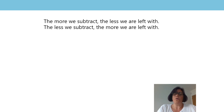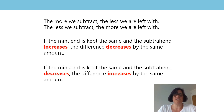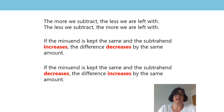Two lessons ago, we learned that the more we subtract, the less we're left with, or the less we subtract, the more we're left with. In Mrs Grimes' lesson, we had a new generalisation: if the minuend is kept the same and the subtrahend increases, the difference decreases by the same amount. So today, I think we can add another generalisation: if the minuend is kept the same and the subtrahend decreases, the difference increases by the same amount. You might want to jot that down, because it's time for you to work on your own, and using the generalisation will really help you work out the answers without having to calculate everything from the beginning each time.